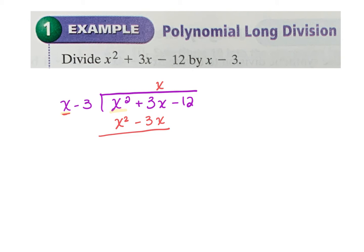Remember, in long division you are subtracting. My advice is to add the opposite, because the number one mistake in long division is with positives and negatives — mess up one and it throws off the whole problem. If you add the opposite of both terms, you see x² and −x² cancel, and 3x and +3x give you 6x — not zero. Your brain will play tricks on you, so always add the opposite.